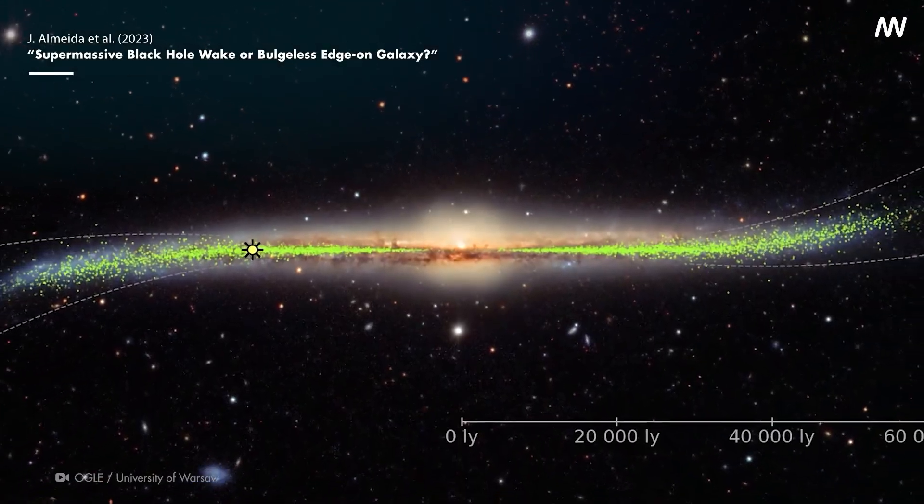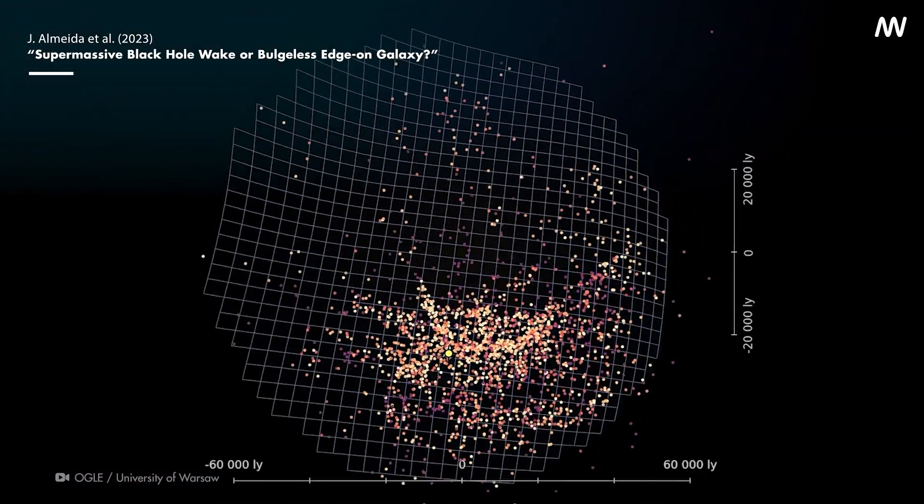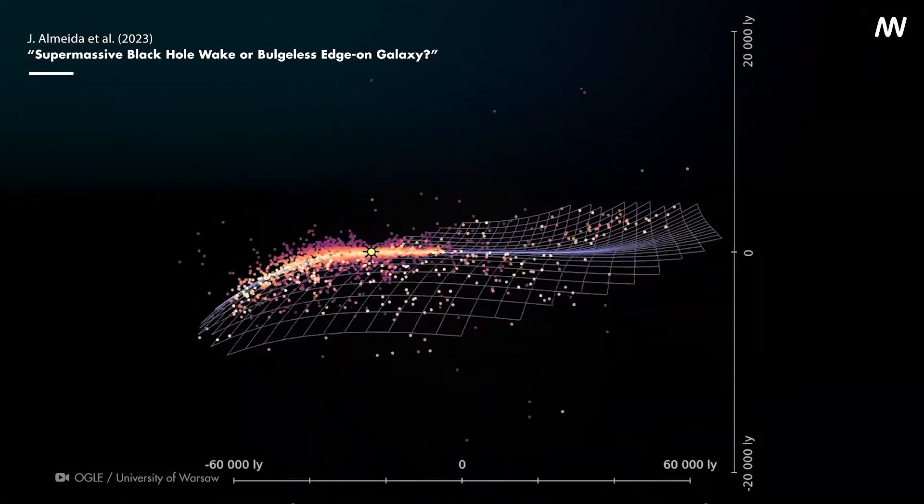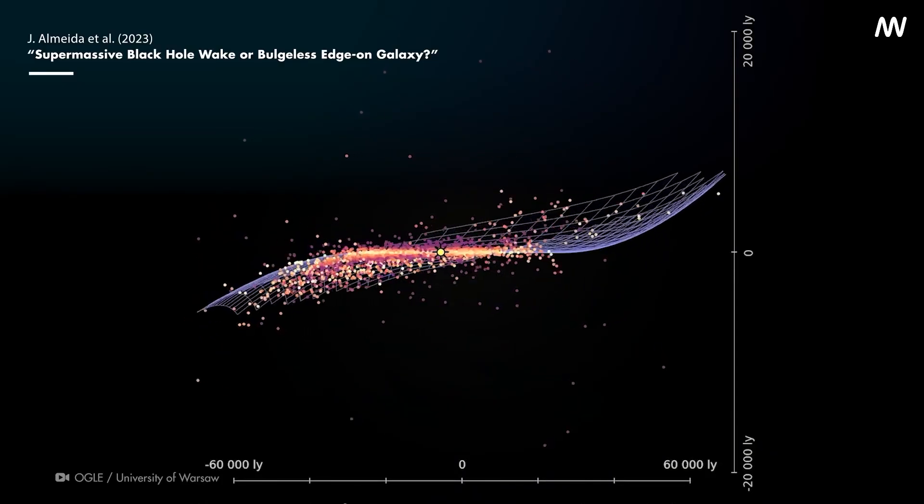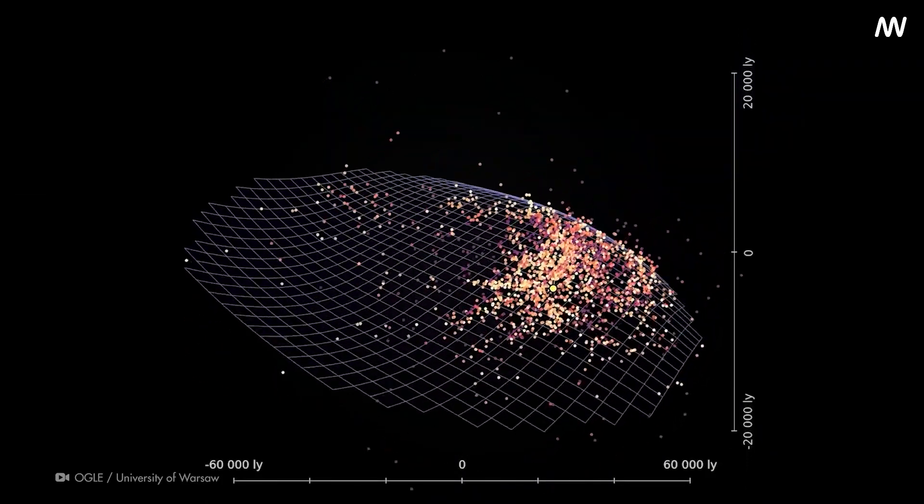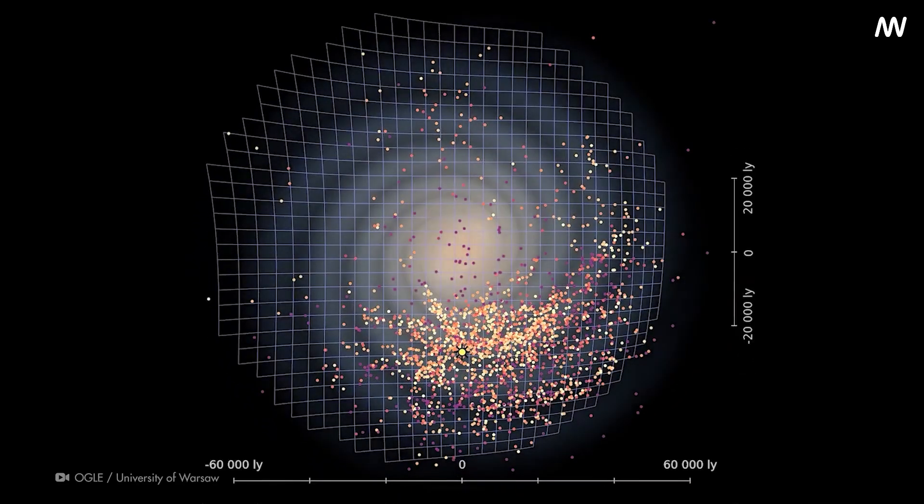And there is another study that offers a different interpretation. They suggest that the stellar trail could be nothing more than a bulgeless galaxy viewed edge on. It's like looking at a coin from the side and mistaking it for a thin line.